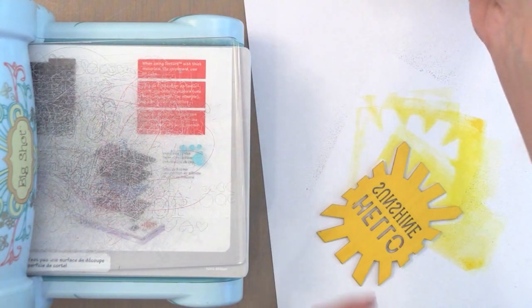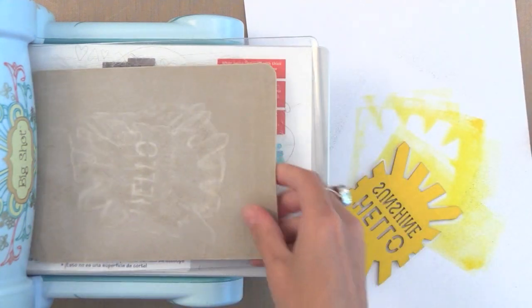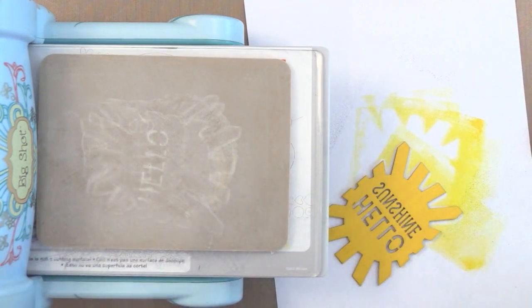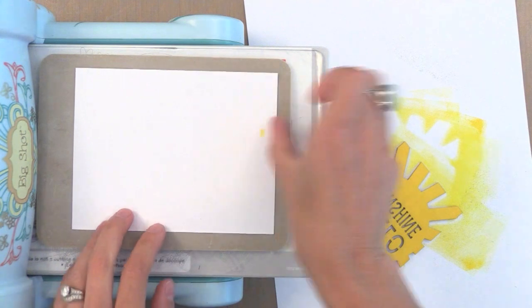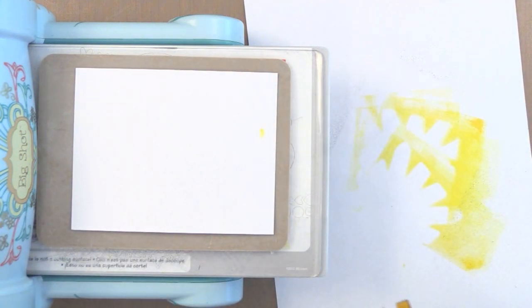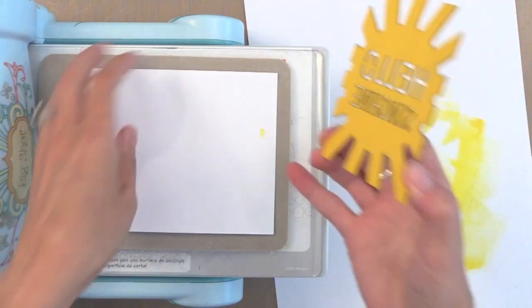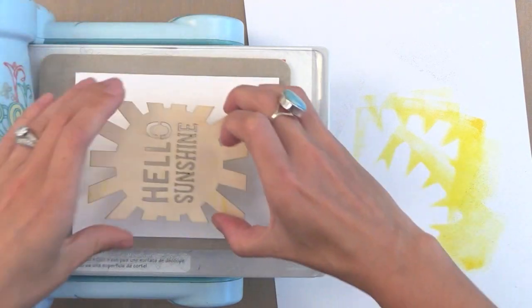Now I'm going to use my Big Shot Machine with all the tabs open. This is how I normally would do an embossing folder. I have my tan embossing mat from Spellbinders. It's a nice foam mat. I have a piece of heavyweight card stock, this 110 lb white Neenah card stock.